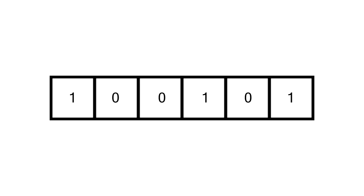Imagine a very long tape. It is divided up into squares. On each of the squares consists of 1s or 0s, or even spaces. The Turing machine works by looking at the cells one by one, starting at the initial state.